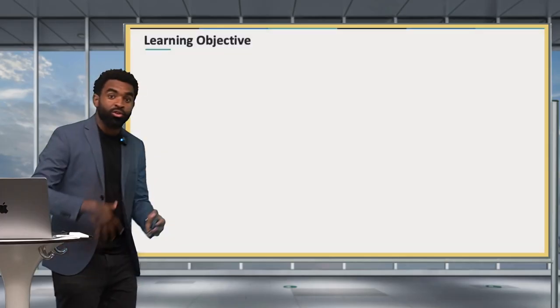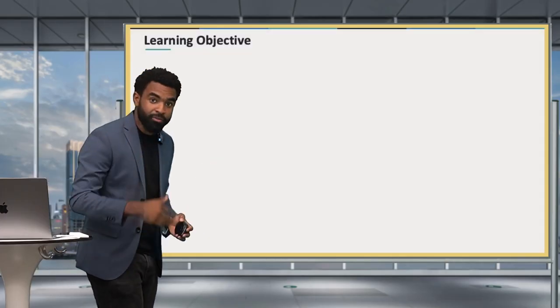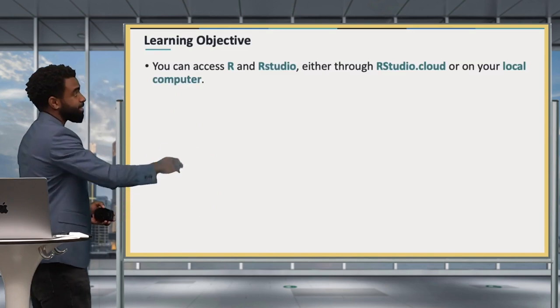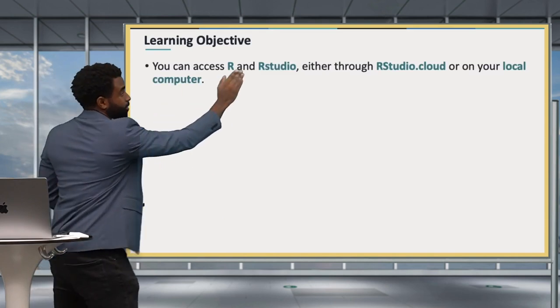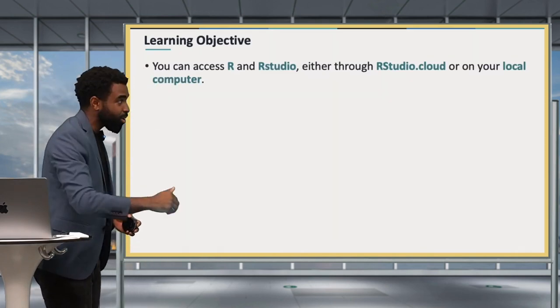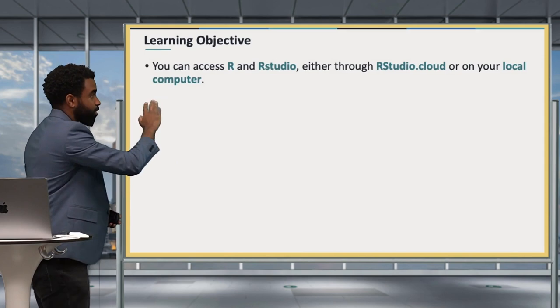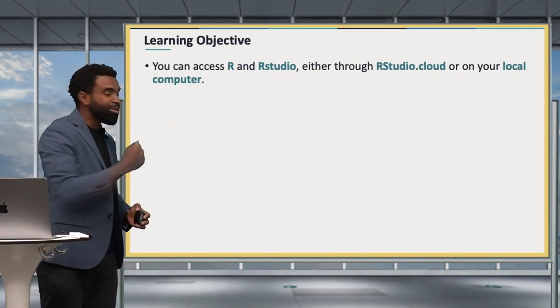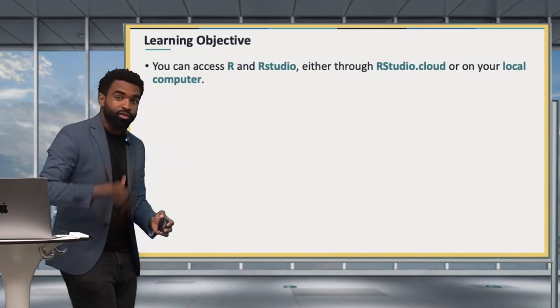Your learning objective for this lesson is that you can access R and RStudio either through RStudio.cloud or through your local computer. Let's see what this means.